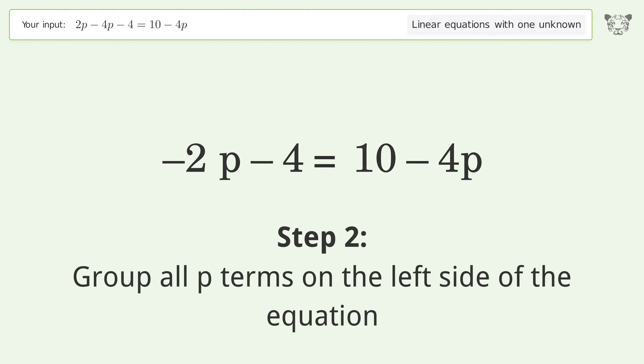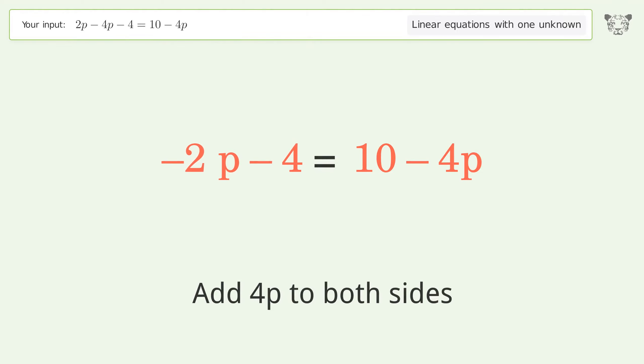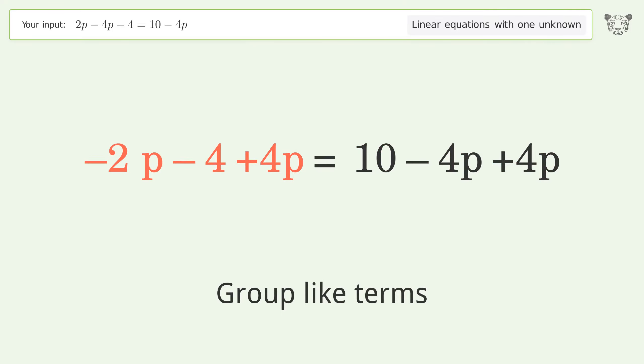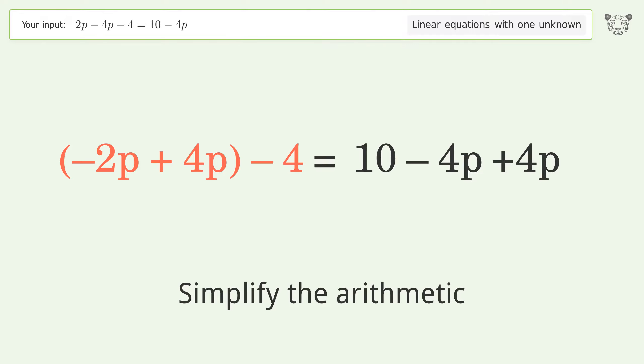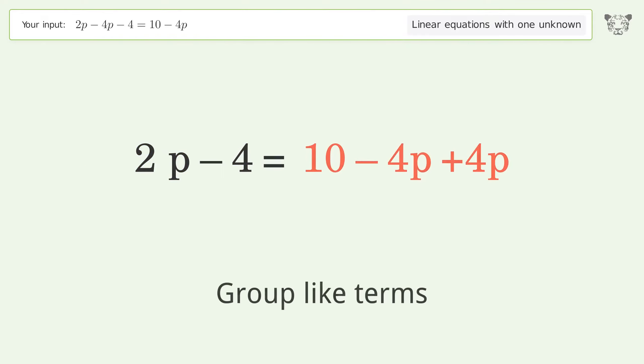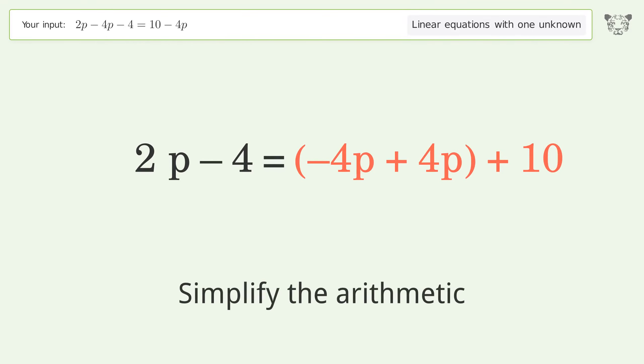Group all p terms on the left side of the equation. Add 4p to both sides. Group like terms. Simplify the arithmetic. Group like terms. Simplify the arithmetic.